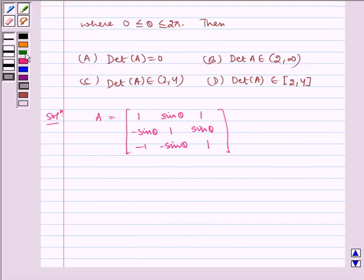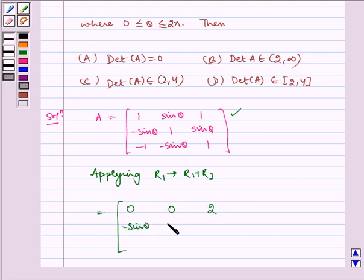Now applying R₁ → R₁ + R₃. Applying row operation on this row, so we get: 1 - 1 is 0, sin θ - sin θ is 0, 1 + 1 is 2. Rest two rows as it is: [-sin θ, 1, sin θ; -1, -sin θ, 1].